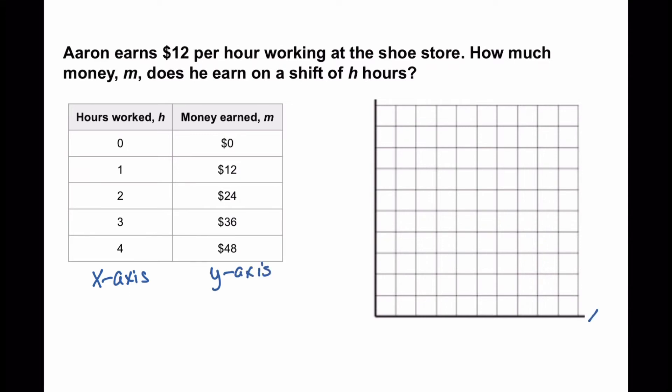So we have x-axis here and we have y-axis here. So at the corner we have zero. So let's go ahead and label the x-axis, and it's going to be labeled with the number of hours.